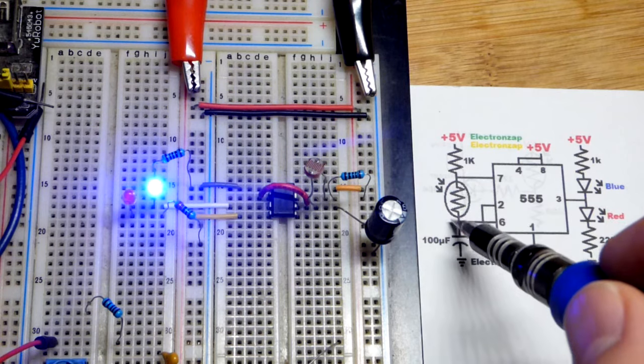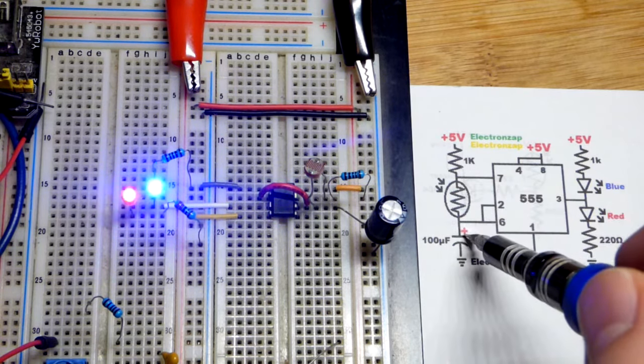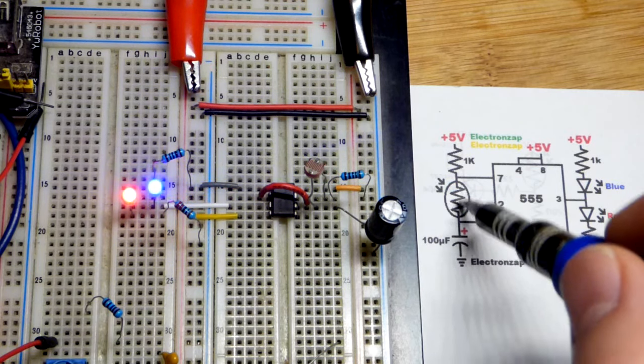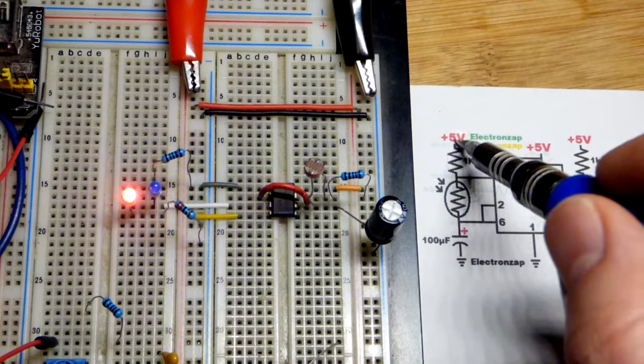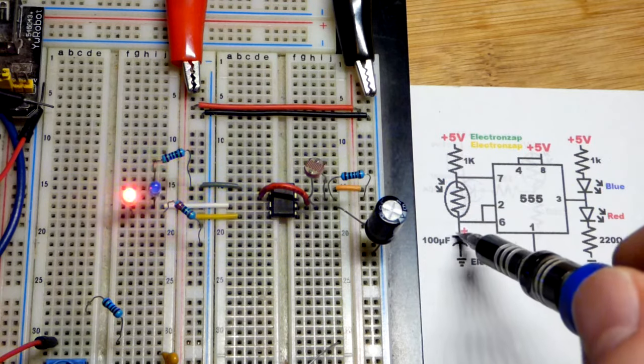But when it discharges, this is the only resistance we got. Whatever current goes through there goes to ground. So it can almost instantly discharge, even if it takes a period of time to charge.